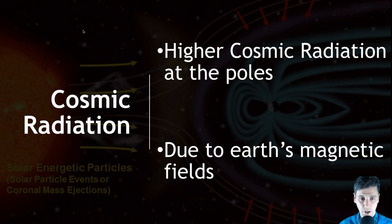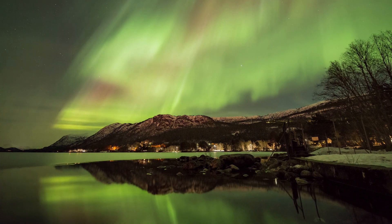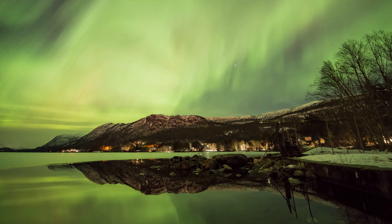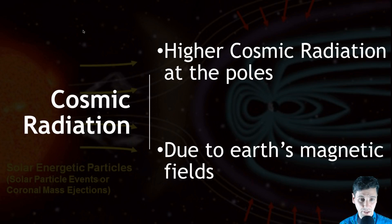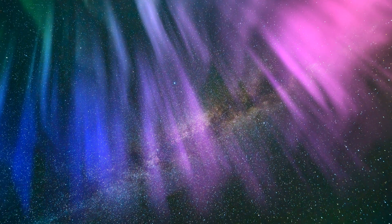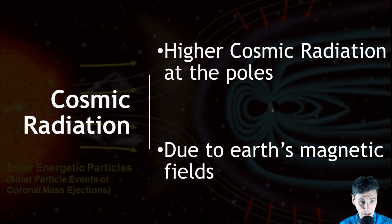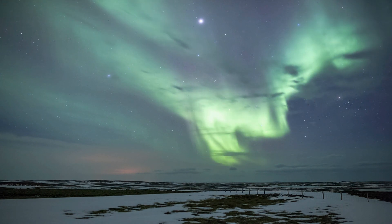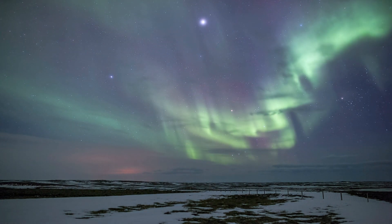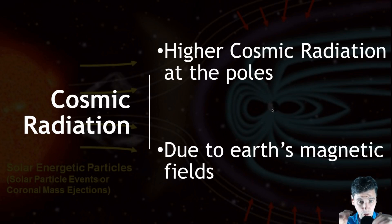We're going to talk about a few different types of radiation exposure sources. One of them is cosmic rays — there are different types, but if you look at this picture in the background, cosmic rays coming from the sun are coming towards the earth. The earth is a big magnet — that's why compasses work and why we have a north pole and a south pole. Because the earth is a spinning magnet, there are magnetic fields going around the earth, and those magnetic fields direct charged particles.